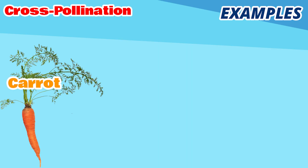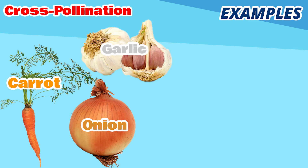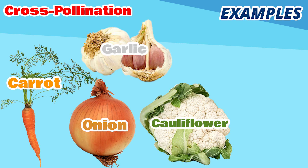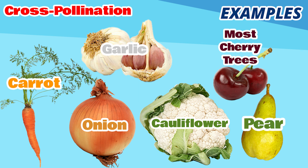What are some examples of cross-pollinating flowers? Carrots, onion, garlic, cauliflower. Most cherry trees require cross-pollination. Most pear trees need cross-pollination from nearby common trees.